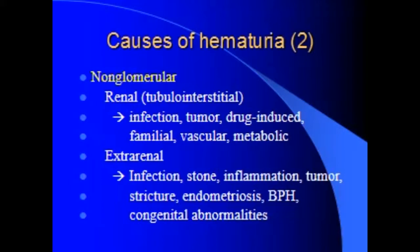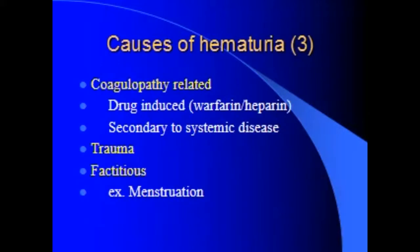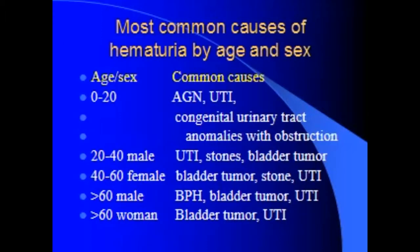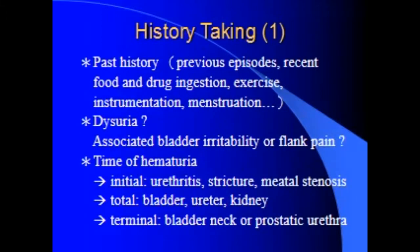Causes of hematuria – Non-glomerular renal: Infection, tumor, drug-induced, familial, vascular, metabolic. Extrarenal causes: infection, inflammation, stricture, endometriosis, congenital abnormalities. Also coagulopathy-related, drug-induced (Warfarin/Heparin), secondary to systemic disease, trauma, and factitious causes.